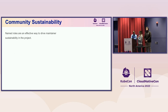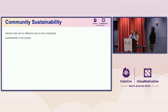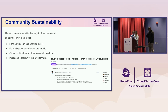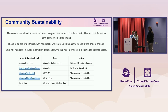Another thing important to me around community sustainability is making sure that contributors are recognized for their work. One piece of that in Kubernetes is named roles. The benefit of having named roles within an open source project is that it's a formal recognition of someone's effort, skill, and time poured into the project. It formally gives contributors ownership of certain areas. Since they have a title and connections at the same level within the contributor ladder, it gives them other avenues to seek help. And it means that once you become a leader of a certain area, you need to train the next person — giving you responsibility to pay it forward.